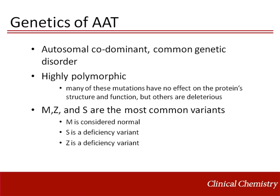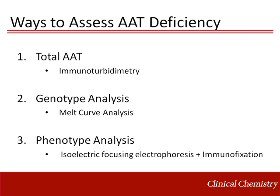The most common AAT variants are the M, Z, and S alleles. M is considered wild type or normal. Both S and Z are deficient alleles. People who are homozygous for the Z allele are at the highest risk for both lung and liver disease. AAT deficiency is largely dependent on the laboratory for diagnosis. Many years ago, AAT deficiency was diagnosed by looking for low alpha-1 globulin levels on serum protein electrophoresis.